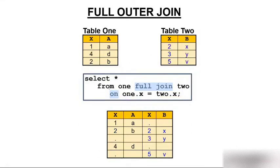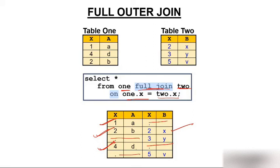For full outer join, the query is: SELECT * FROM 1 FULL JOIN 2 ON 1.x = 2.x. You get every row from both tables. Row 2 matches across both tables. Row 1.a has no match — blank on the right. Row 3.y from the second table has no match — blank on the left. Row 4.d from the first table has no match — blank. Row 5.b has no match either. So you get every row from table1 and table2; matching rows appear together, and non-matching rows get null values.